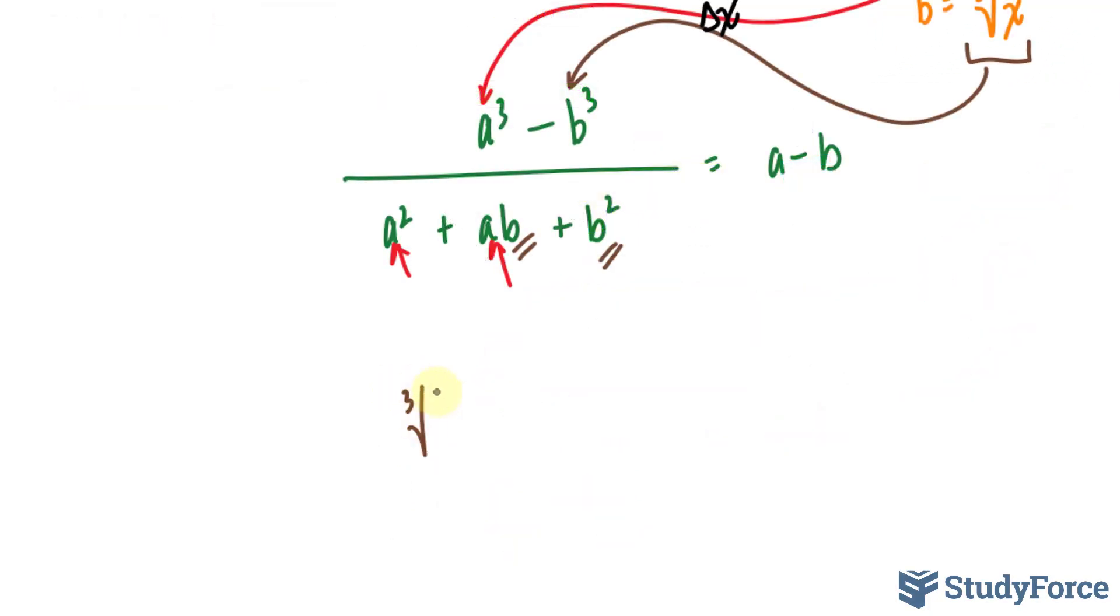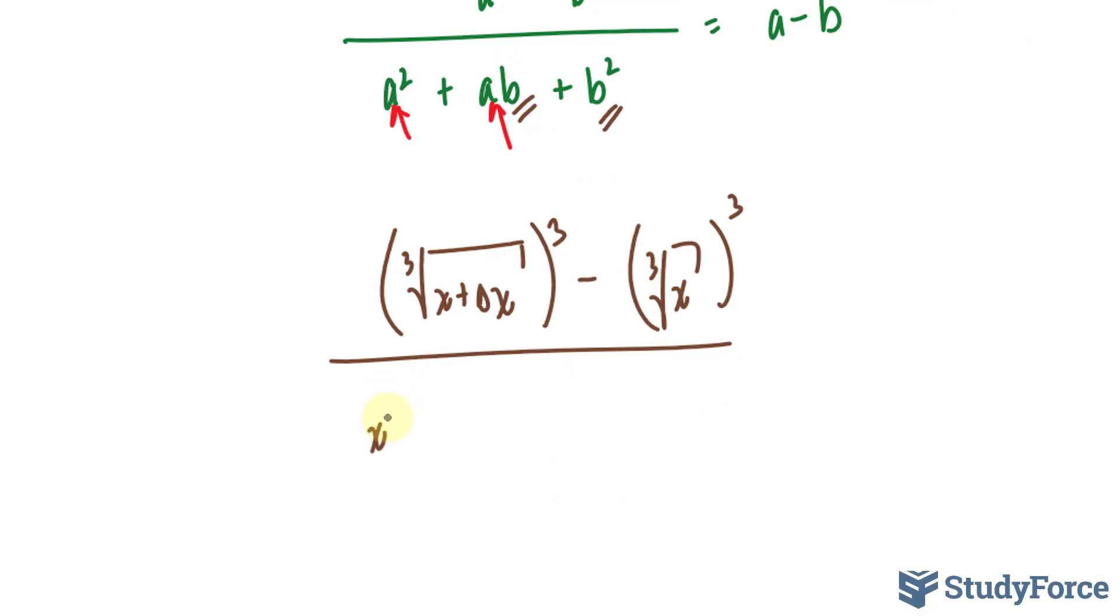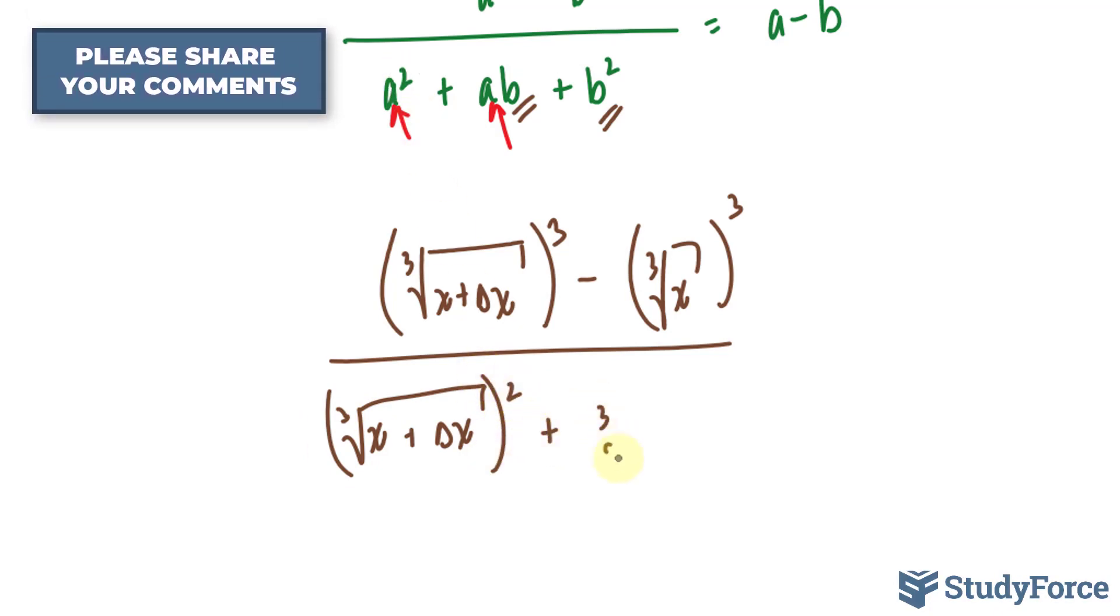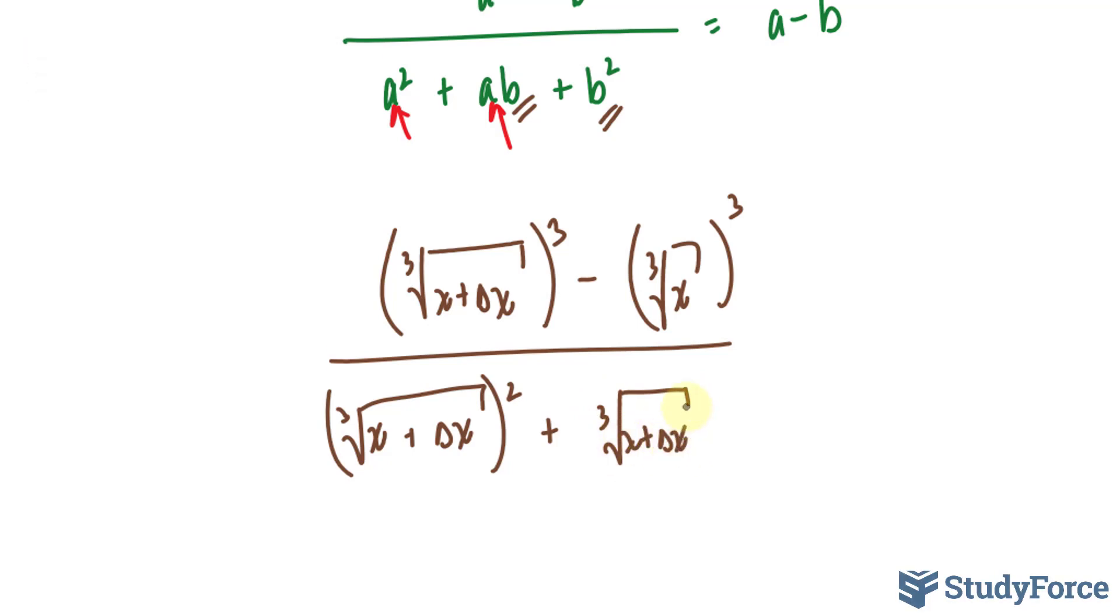So I have the cube root of x plus delta x, and that's being raised to the power of 3, minus the cube root of x, which is also being raised to the power of 3. And at the bottom, the denominator, we have x plus delta x, and that's the cube root of that expression, raised to the power of 2, plus the cube root of x plus delta x times b, which is the cube root of x, plus b squared, and we know what b is. It's the cube root of x raised to the power of 2.